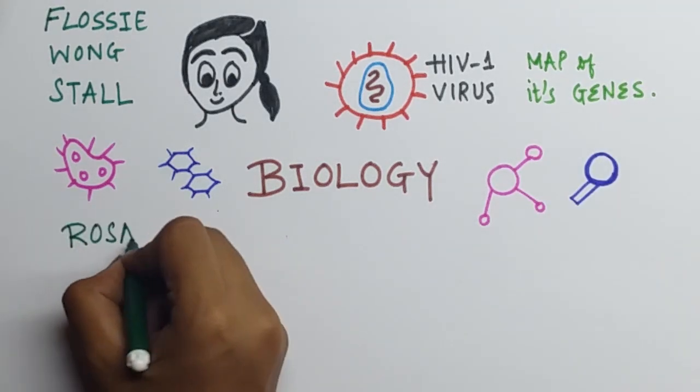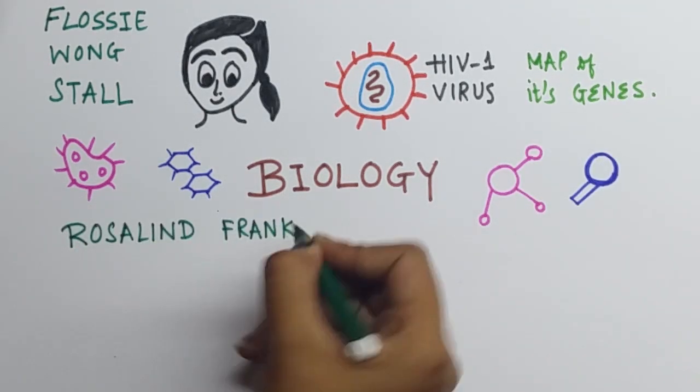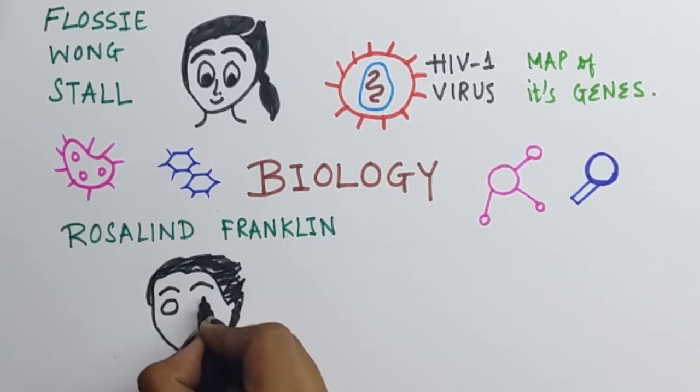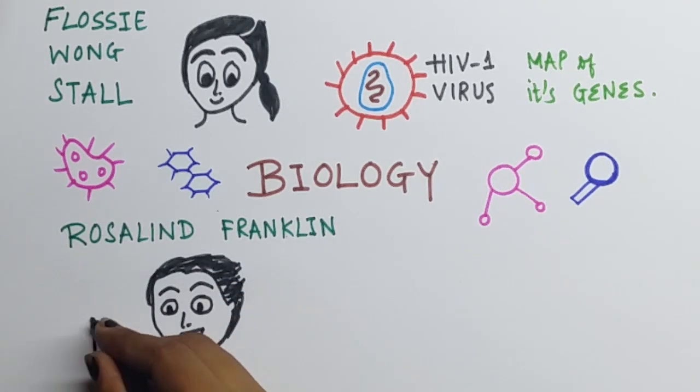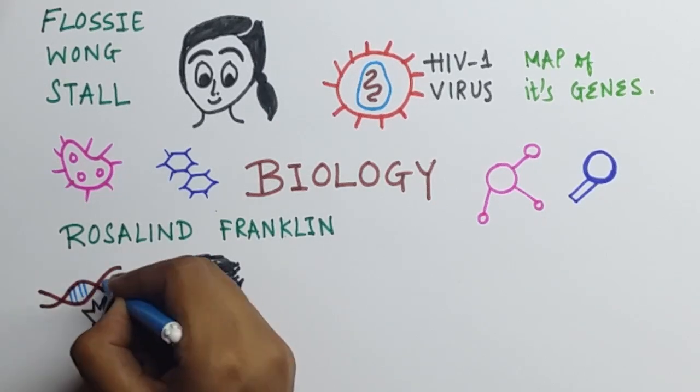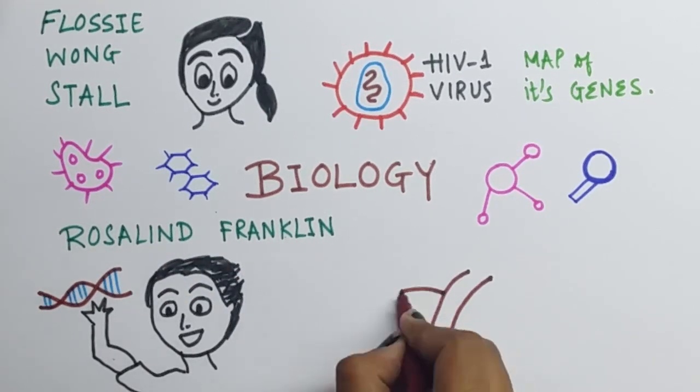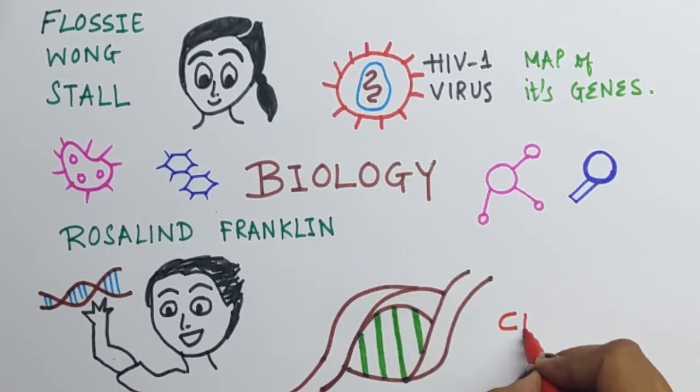You must have heard of Rosalind Franklin, the biologist who took X-ray photographs of crystallized DNA and was actually the first person to discover the double helix shape of DNA, for which she was denied the credit.